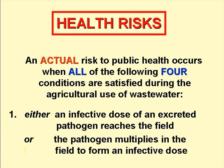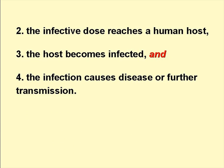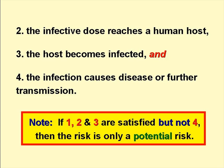An actual risk to public health occurs when all four of the following conditions are met. Firstly, an infective dose of an excreted pathogen reaches the wastewater-irrigated field, or the pathogen multiplies in the field to form an infective dose. Secondly, the infective dose reaches a human host. Thirdly, the host becomes infected. And fourthly, the infection causes disease or further transmission. If the first three conditions are met but not the fourth, the risk is not an actual risk, but only a potential one.